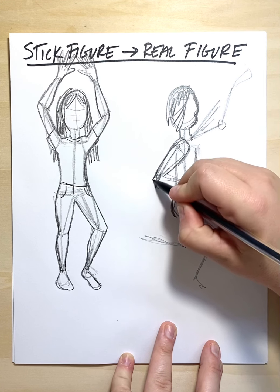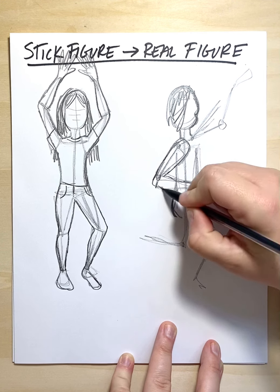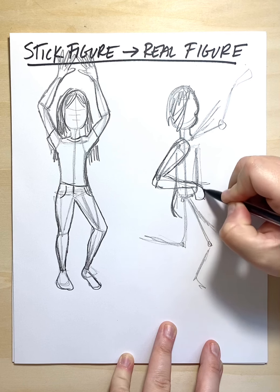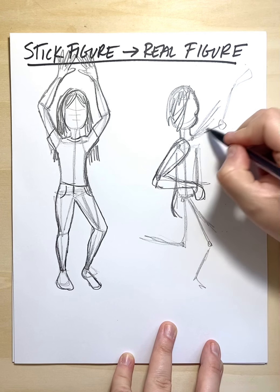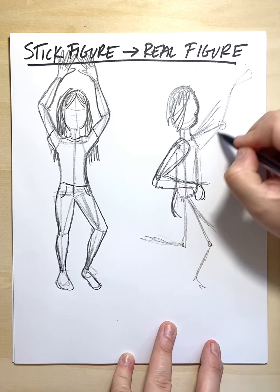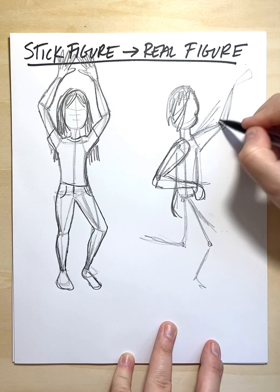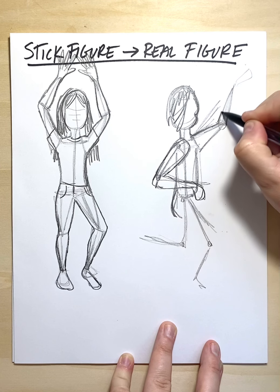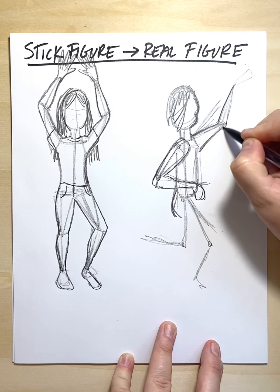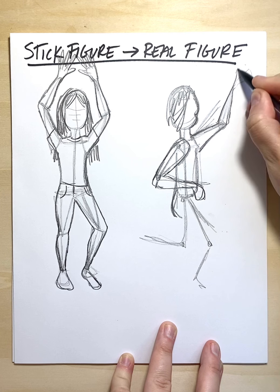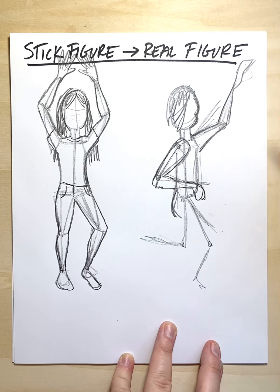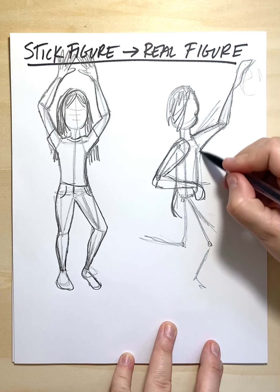So shoulder coming on down, getting that elbow, forearm, and hand. Now this arm is gonna go up, so I'm actually gonna draw in my triangles also, so I can follow where these shapes would go. My hand coming up a little crazy. We're gonna pretend like they're playing basketball.